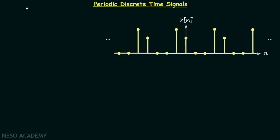This lecture is divided into three parts. In the first part we will understand what are periodic discrete time signals and the condition for a discrete time signal to be periodic. In the second part we will calculate the period of a composite discrete time signal. In the third part we will derive the condition for a complex exponential and sinusoidal discrete time signal to be periodic.